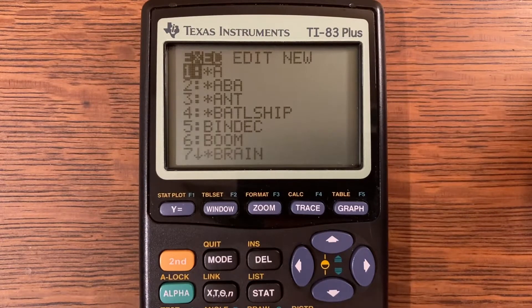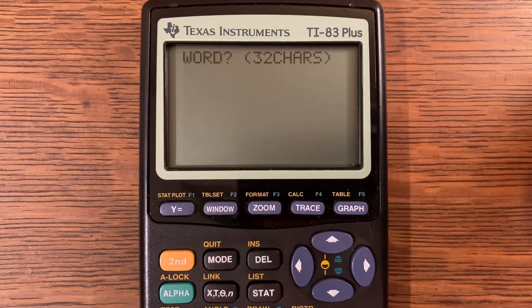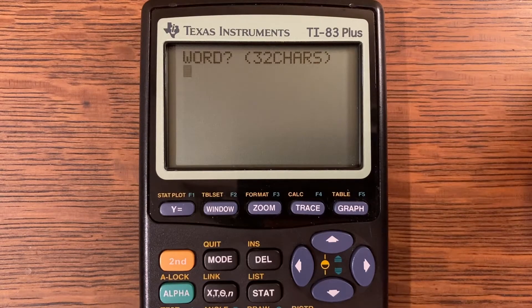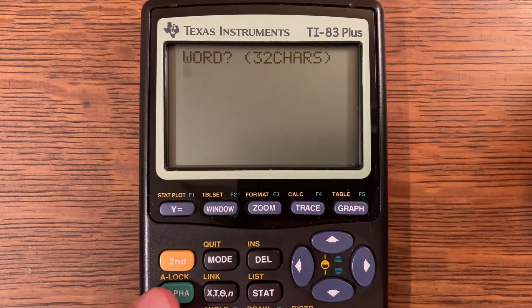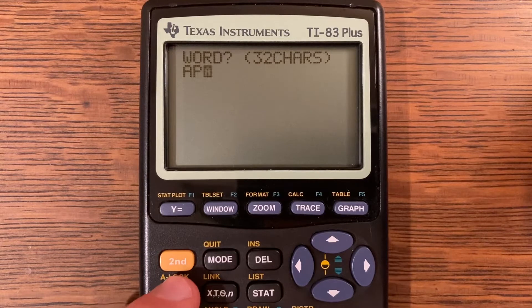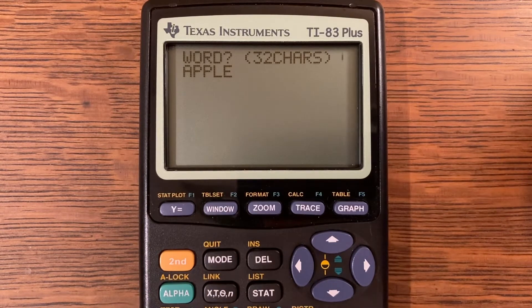Now let me show you program Hangman. I'm going to execute it and it's going to ask the person to input a word up to 32 characters long. I'll just do a simple word like apple. I'm going to enter that quickly and then click the enter key when I am finished.